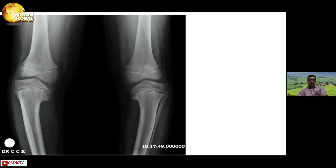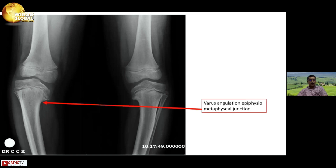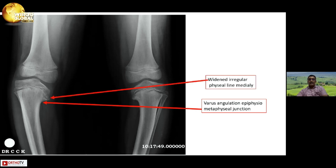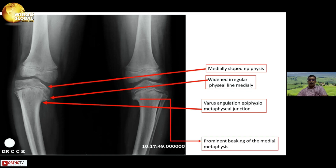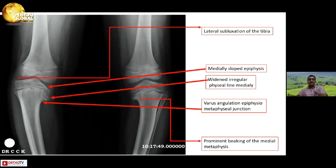There are distinct radiological features which distinguish Blount's from physiological genu varum. One of them is varus angulation at the epiphysio-metaphyseal junction. A widened, irregular physis line on the medial side is one of the classical features. The medially sloped epiphysis is another feature, along with prominent beaking of the medial metaphysis and lateral subluxation of the tibia. When you put all these features together, you can reasonably conclude it is Blount's disease.